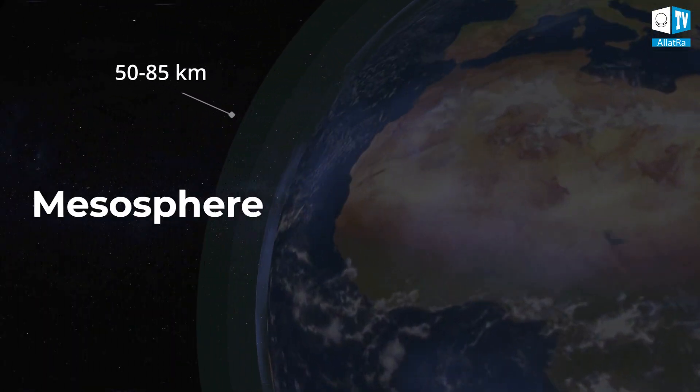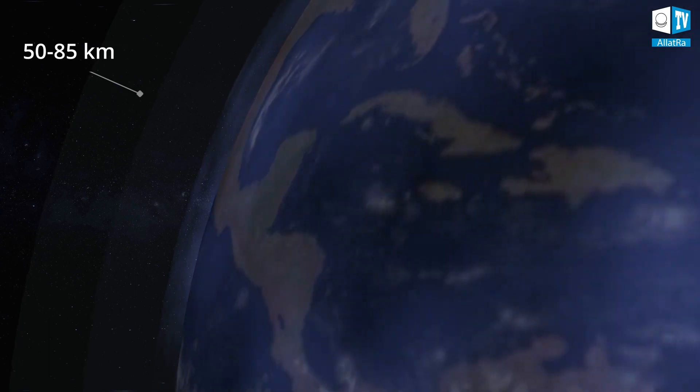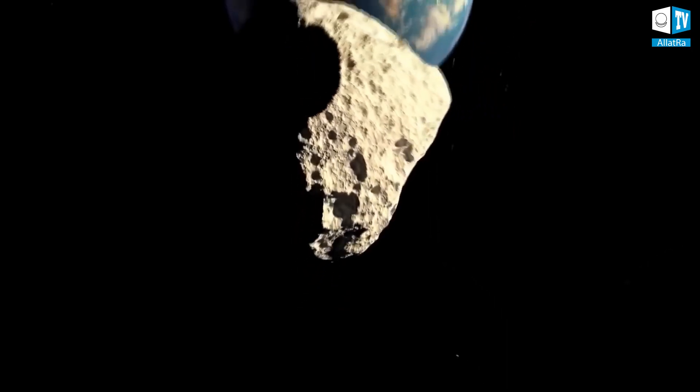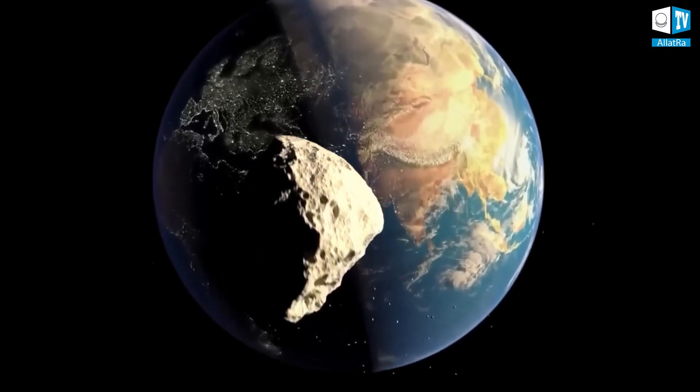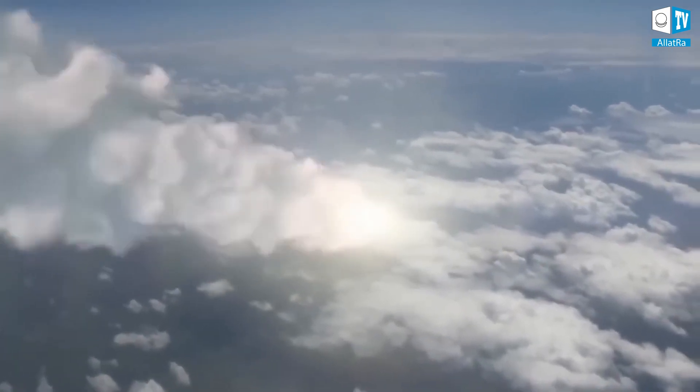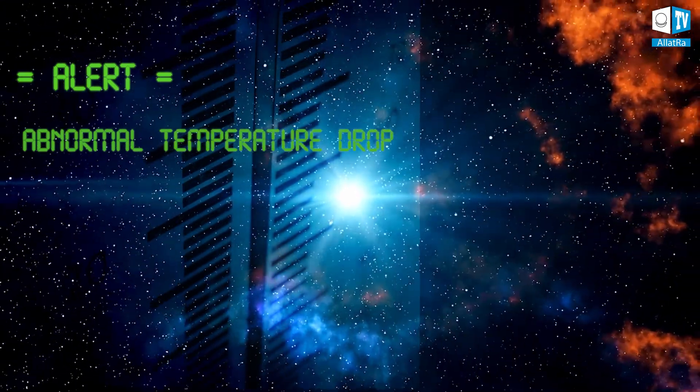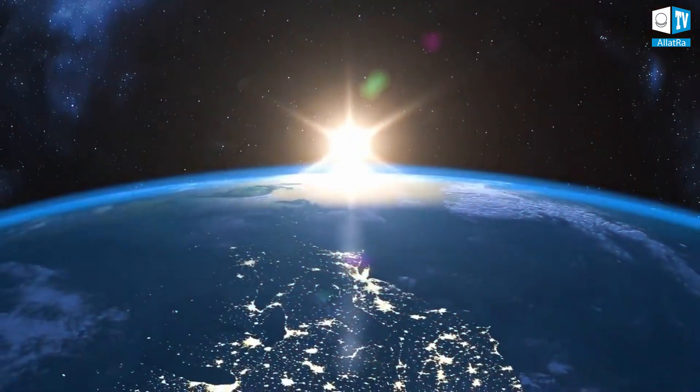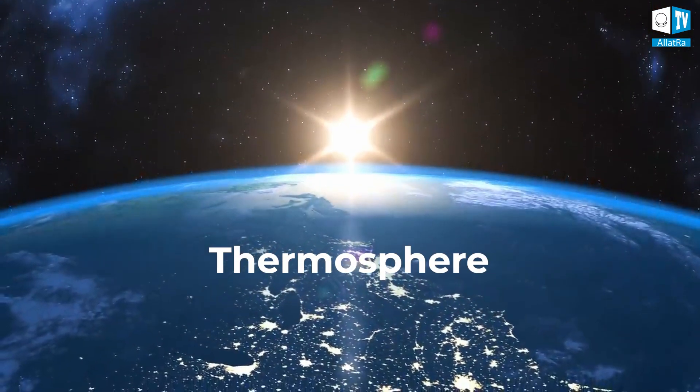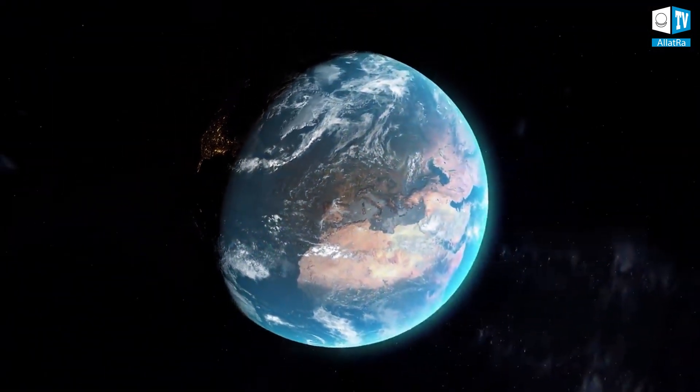The mesosphere is the layer that protects the Earth from being hit by small celestial bodies, meteorites and asteroids. The thickness of the layer is 50 to 85 kilometers. Every day, dozens of tons of meteorites enter the Earth's atmosphere. But thanks to the mesosphere, they burn up before they reach the surface. From Earth, this phenomenon is seen as shooting stars. Warning! Abnormal temperature drop.